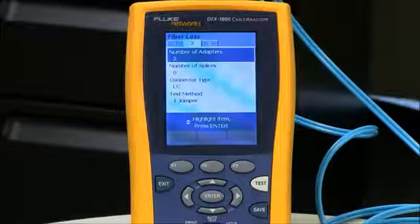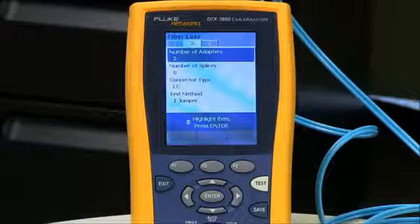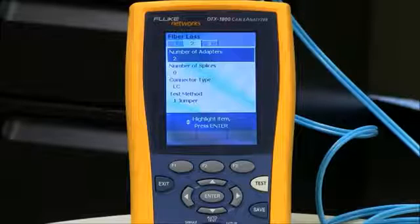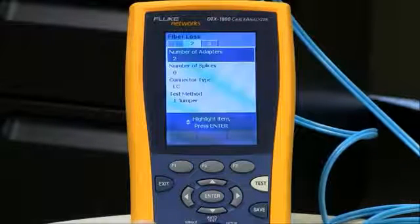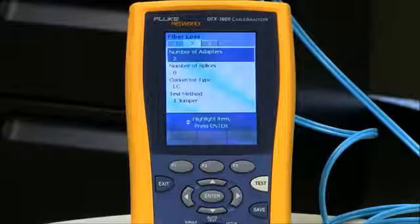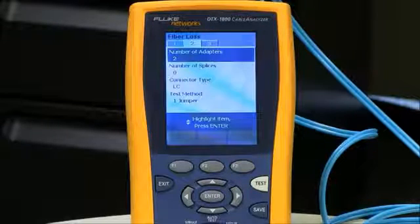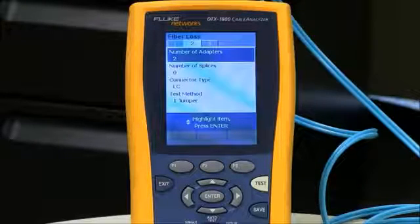My number of splices is zero, even though I'm using mechanical connectors today. And when I say mechanical connectors, I'm talking about types such as the Unicam, which have a mechanical splice inside. That's part of the connector. You do not add an extra splice count in there for each of those connectors. My connector type is LC. That's not going to affect the outcome of the test result. That's just going to affect the help screens on the DTX cable analyzer.